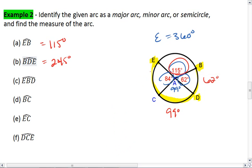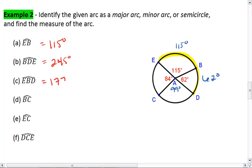Let's look now at arc EBD. Arc EBD goes from point E to point D passing through B. This is going to be 115 plus 62, so I get 177 degrees.